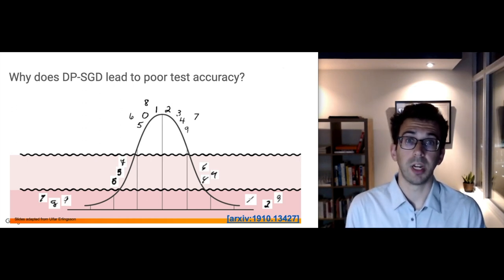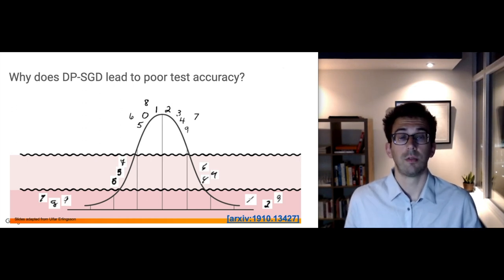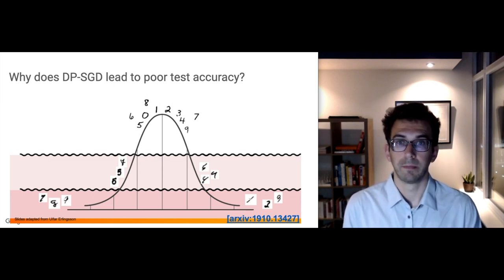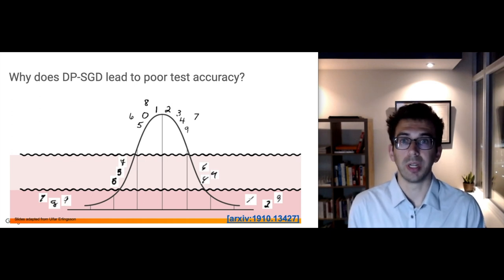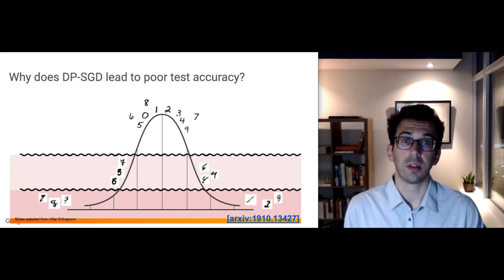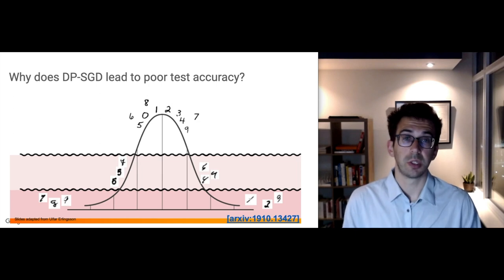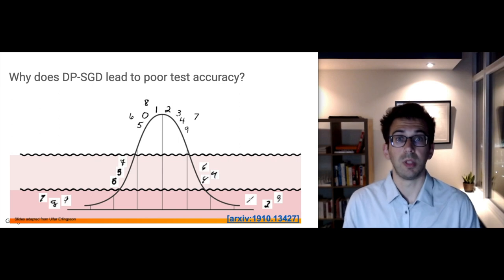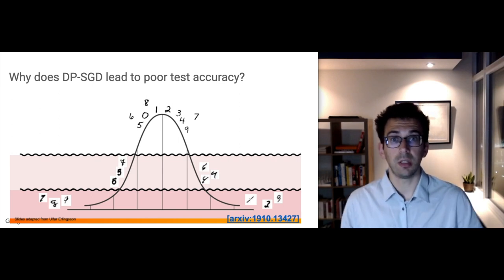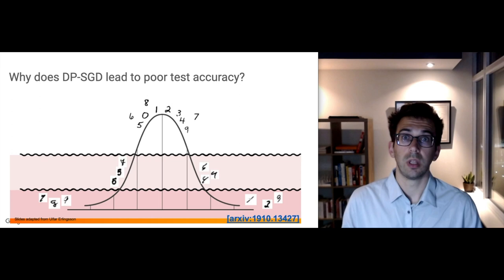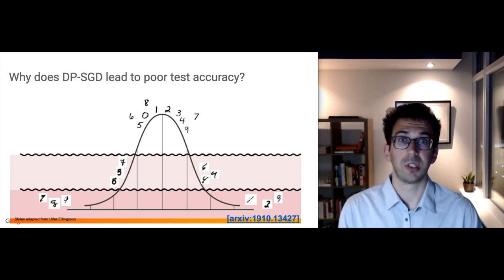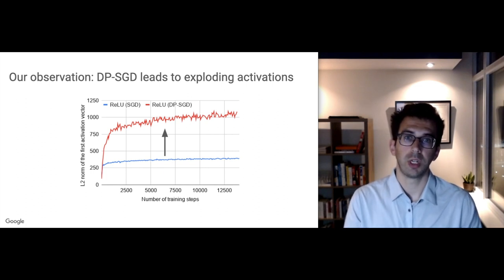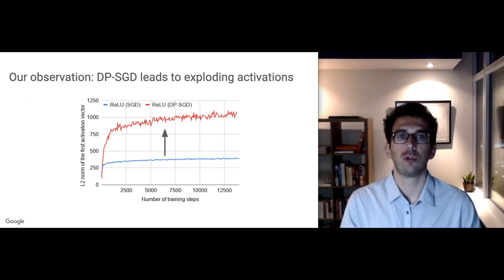An important step in providing differential privacy guarantees for an algorithm is to assess its sensitivity. A learning algorithm's sensitivity characterizes how much an individual training point can, in the worst case, affect the learning algorithm's outputs. This is what I illustrated in my slide on differential privacy by looking at the difference between the outputs of the learning algorithm on the dataset that contains the individual's record with the outputs of the algorithm on the dataset that did not contain the individual's records. In general, the ability to more strictly bound sensitivity leads to stronger privacy guarantees.